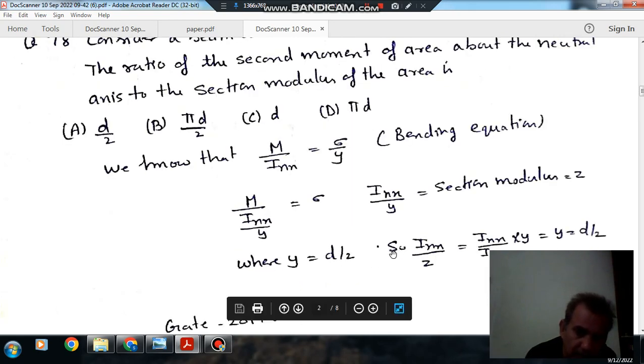So I_xx by Z, that is I_xx by y, will be equal to y. And as y is d by 2, so the answer is determined.